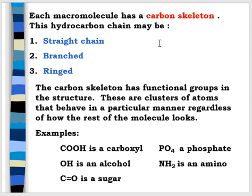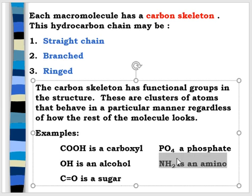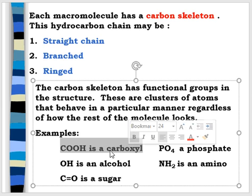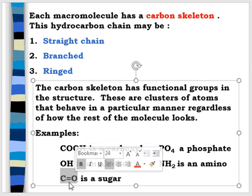Each macromolecule will have a carbon skeleton in organic compounds. They can be straight chained, they can be branched, or they can form rings. Common rings include things like carbohydrates and sugars. The carbon skeleton has a functional group. Some key functional groups include the PO4 or phosphate group, the NH2 or amino group, the COOH or carboxyl acid group, and the OH group found as an alcohol. A C with a double bond to an oxygen — that double bond is not an equal sign — is a sugar bond.